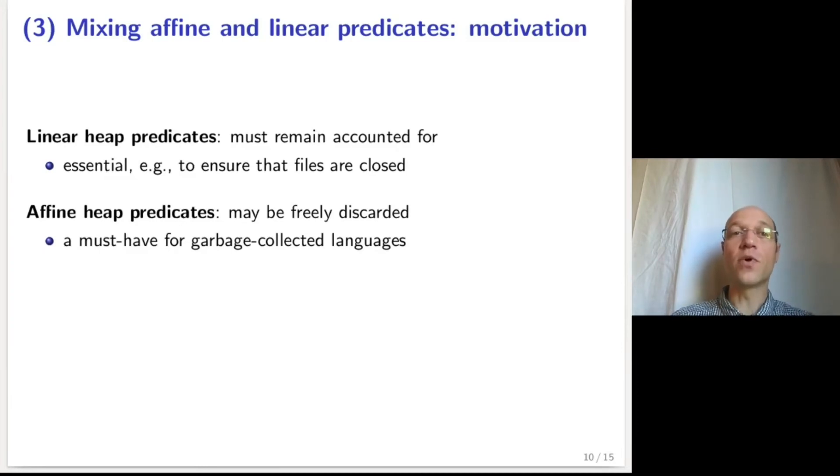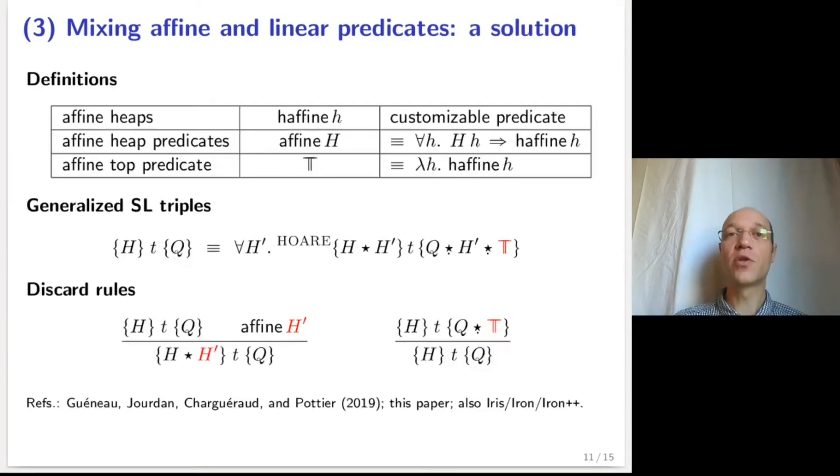Typically, this notion of affine predicate is a must-have for garbage-collected languages, which do not feature explicit free operations. It is straightforward to set up a linear separation logic, and it is not much harder to set up an affine separation logic. But what is a simple way to set up a separation logic where both linear and affine heap predicates can coexist? In the course I describe a construction that is relatively simple, which relies on the introduction of a predicate, H-affine, that can be customized to define which heaps should be considered affine as opposed to linear.